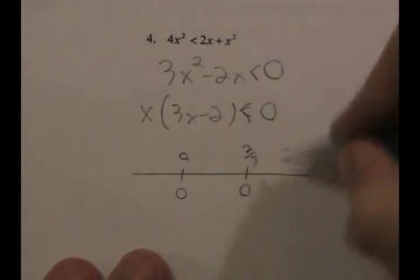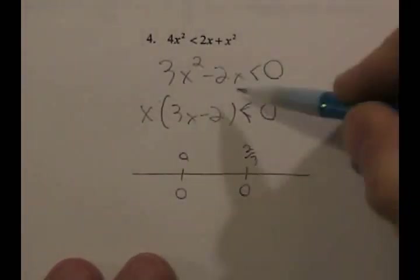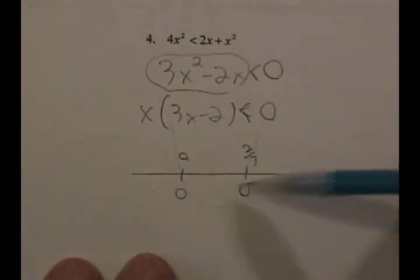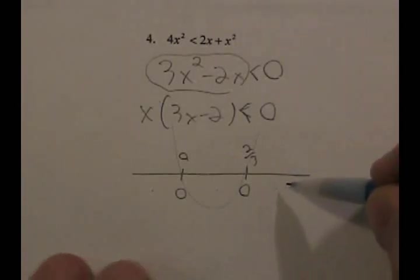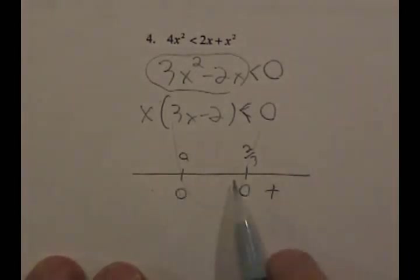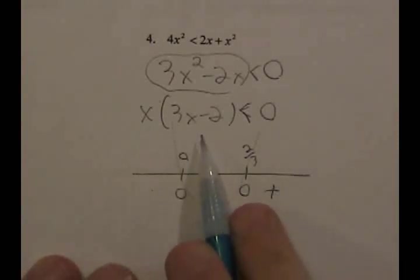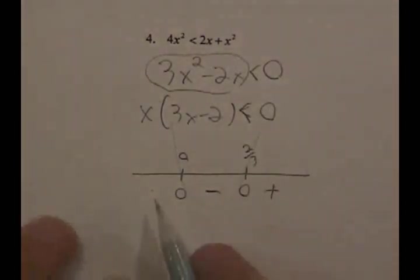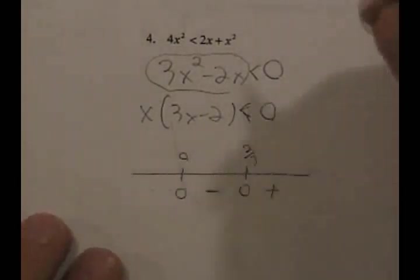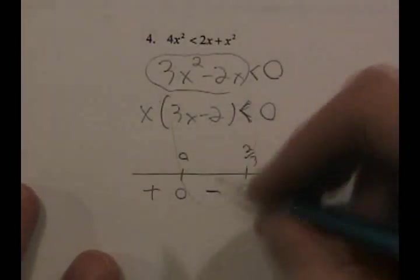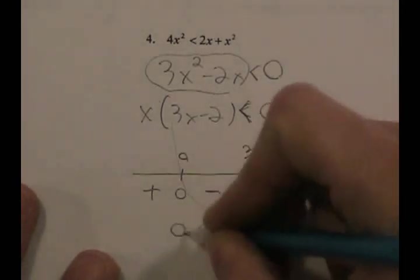At two-thirds the expression is zero. We know it's a parabola that opens up, so the signs are positive, negative, positive. If you plug in a number greater than two-thirds, both x and (3x-2) are positive, so the product is positive. Between zero and two-thirds, x is positive but (3x-2) is negative, giving a negative product. For negative x, both factors are negative, so the product is positive. We want less than zero, so the answer is x is between zero and two-thirds.